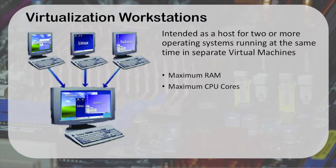The next configuration is a virtualization workstation, where you intend a host to run two or more operating systems simultaneously. For this, you need a really fast processor, and even better, a processor with multiple cores. Rather than a dual-core system, you might want a quad-core, eight-core, or octo-core system like a Xeon processor. Those will have eight cores so you can run eight different virtual machines at the same time. Pairing that with 16, 24, or 32 gigabytes of memory makes a great virtualization workstation.